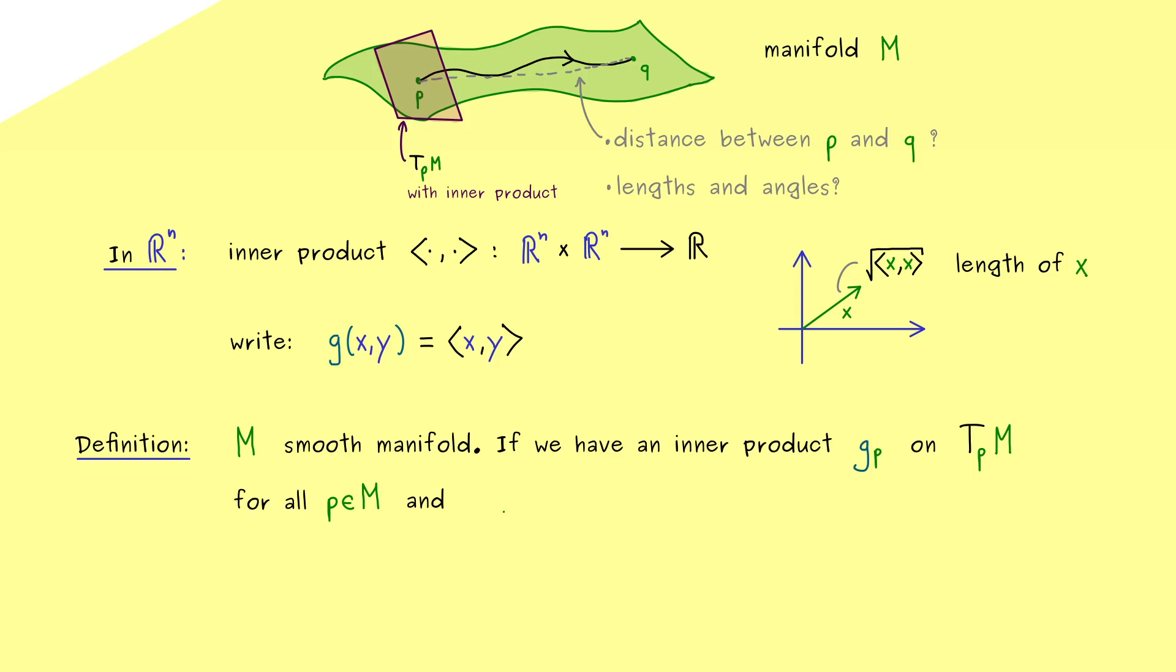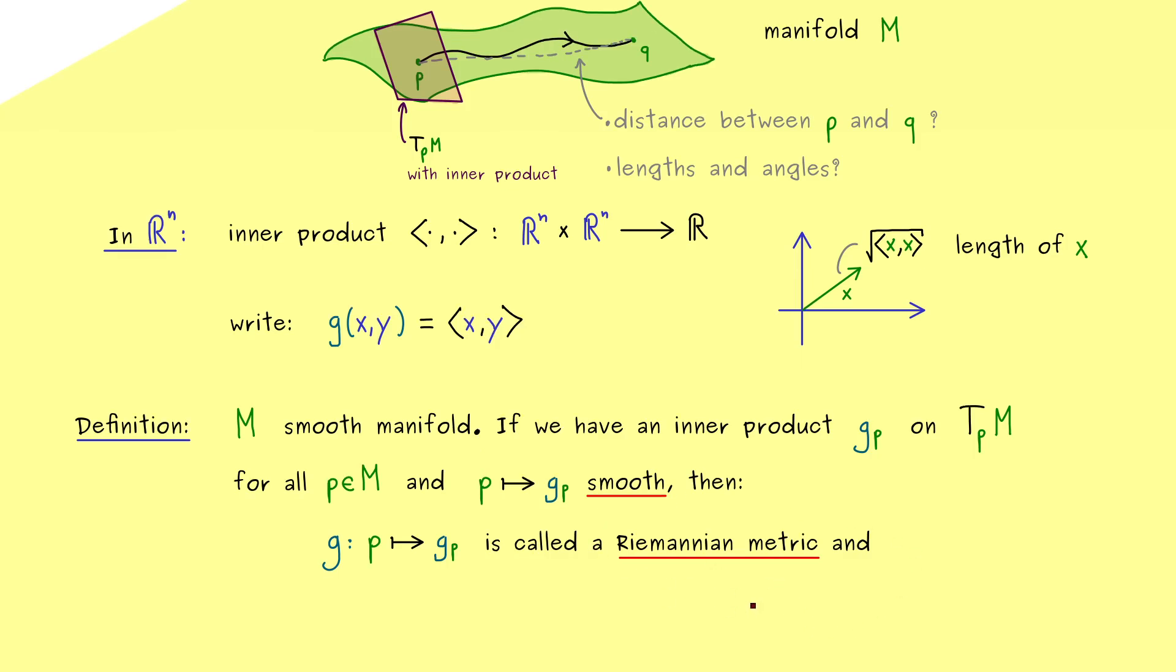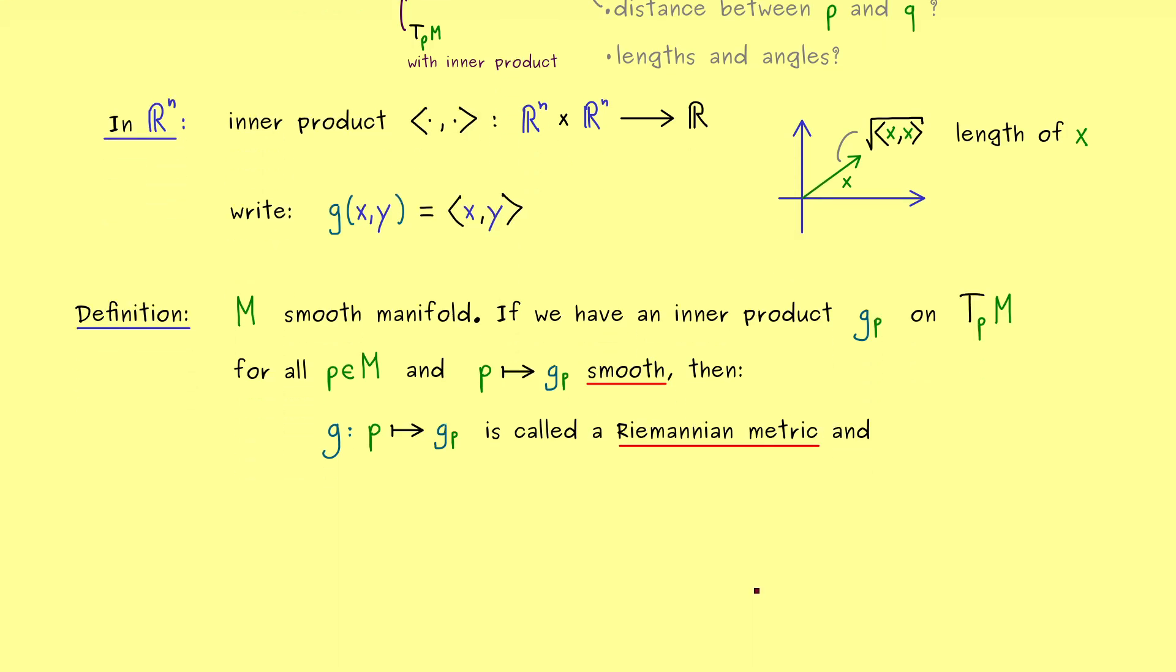And moreover, we want that they are connected in a continuous and differentiable way. This means that the map P to g_P is a smooth map. What this exactly means, we will discuss in a moment. First, we should note that this map g that sends P to g_P is called a Riemannian metric. And a manifold together with a Riemannian metric is called a Riemannian manifold.